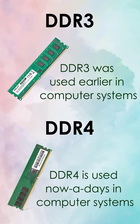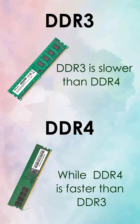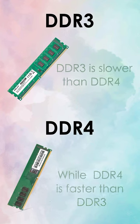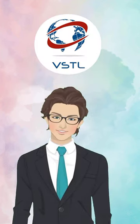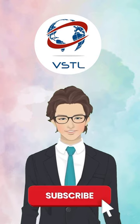DDR3 was used earlier, but DDR4 is used nowadays in computer systems. DDR3 is slower than DDR4. For more interesting videos like this, subscribe to our channel.